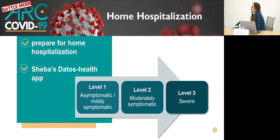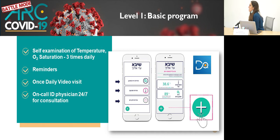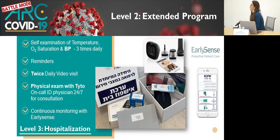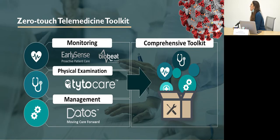For this, we used the Shiba Datos Health app. We created a system that allowed us to monitor patients in their homes using self-measurements of vital signs, reminders with our applications, questionnaires about the physical state, on-call physicians, and video visits by the treating physicians. For more severe patients, we had an extended program. So actually, we made a zero-touch telemedicine toolkit that we could use not only for inpatients, but also for outpatients with corona in their houses.